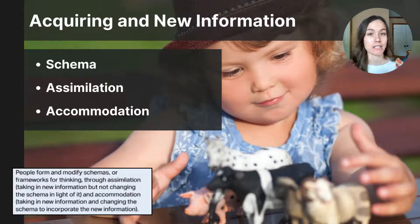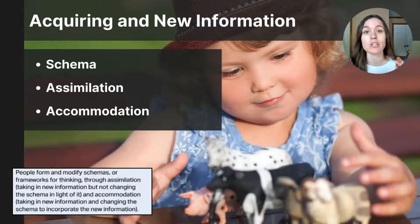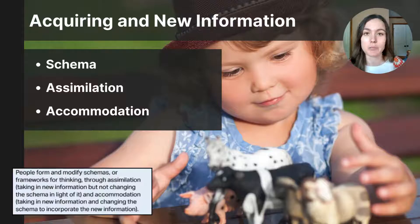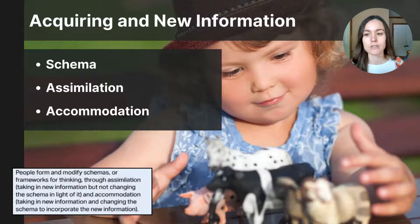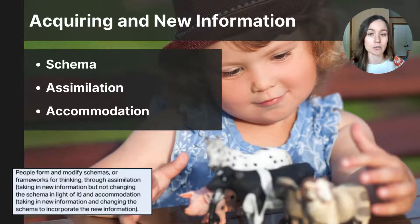Now that we have a basic understanding of how we categorize information in our brains, let's build on how we encounter new information and organize it. As we acquire new information, we develop what's called schemas. We either assimilate information into our existing schemas or accommodate them to create new schemas. A schema is a mental framework of ideas and expectations that we develop through experience. Schemas are similar to concepts but can be more complex, encompassing related concepts within a larger framework.